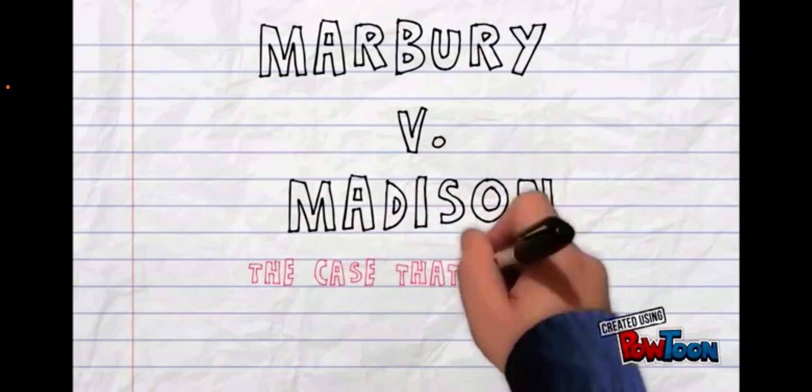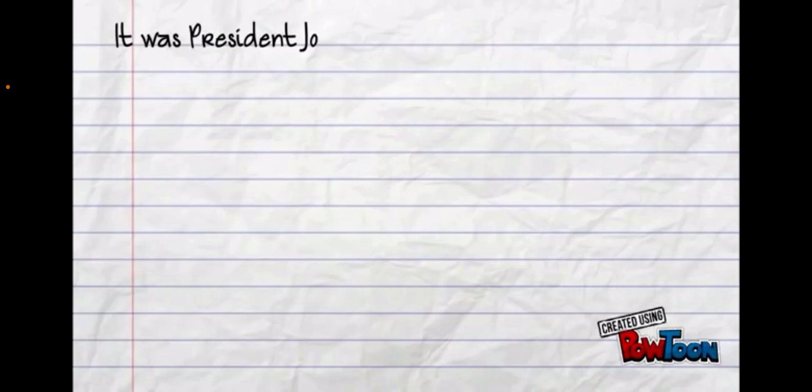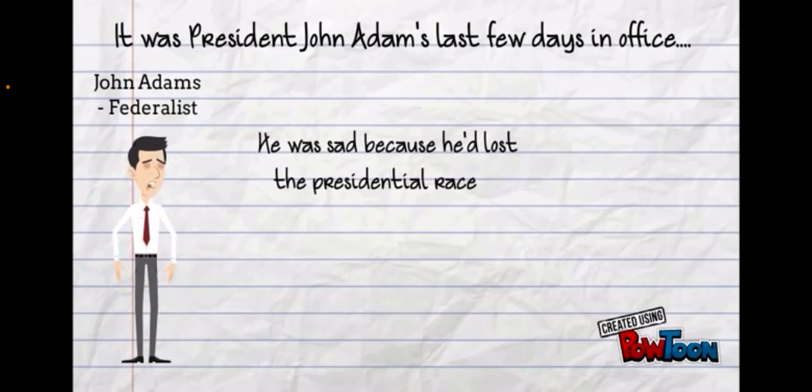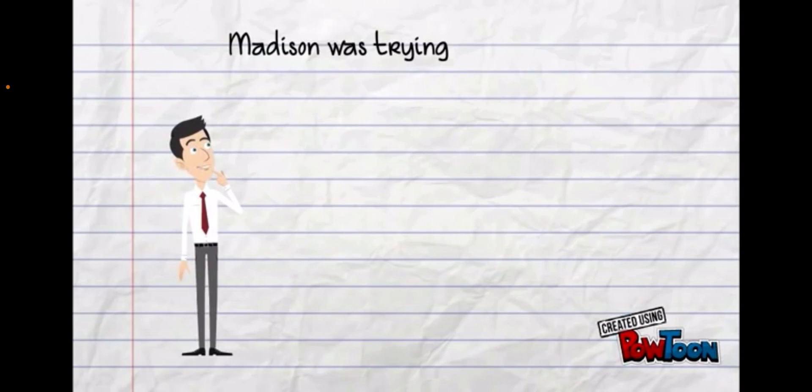Marbury versus Madison, the case that created judicial review. It was President John Adams's last few days in office. John Adams, a Federalist, was sad because he had lost the presidential race to Thomas Jefferson, an Anti-Federalist.